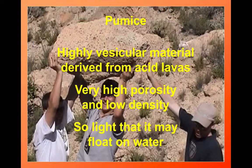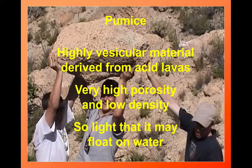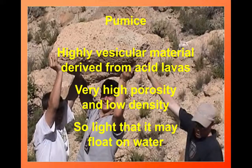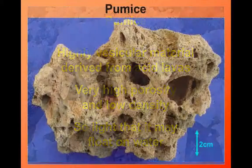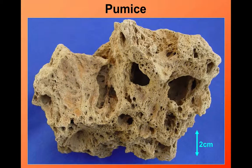If we take it to its extreme, we can find vesicular rocks that are so vesicular that the resulting rock is very low density. I have even seen some of these rocks in Iceland that will float on water. This is what we call pumice. You can see the majority of this rock is actually void space — this is the froth on top of the lava flow, crystallised and frozen.